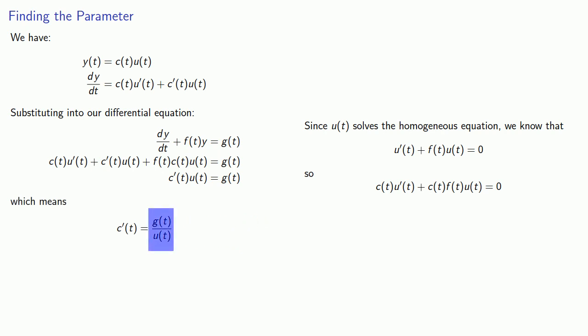And since the right-hand side is a function of t only, we can find c(t) by integration. And so we find c(t) is the anti-derivative of the quotient, g(t)/u(t) dt.